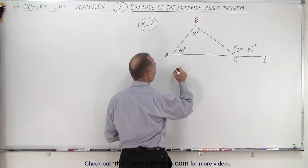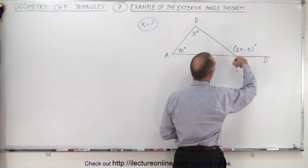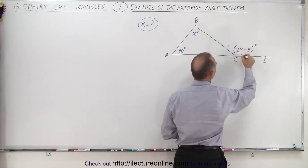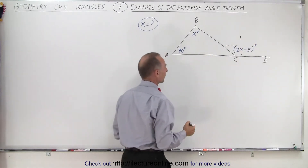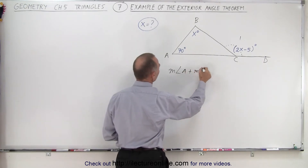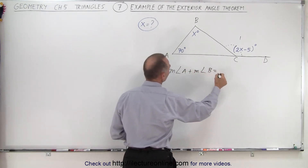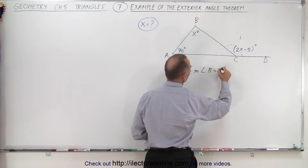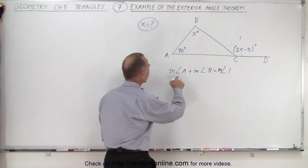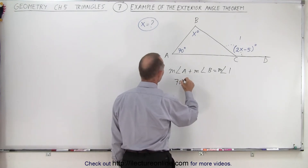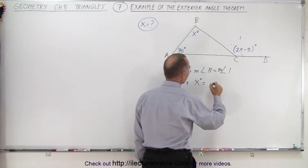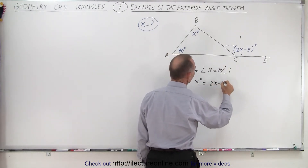This is angle C. Let's call the exterior angle, angle 1. We can then say that the measure of angle A plus the measure of angle B must equal the measure of angle 1. That means 70 degrees plus x degrees must equal 2x minus 5 degrees.